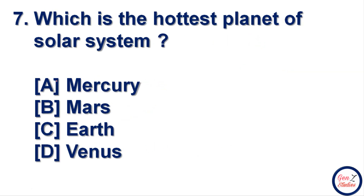Next question: which is the hottest planet of the solar system? Options are Mercury, Mars, Earth, and Venus. You might think Mercury is the answer, but that is wrong. The correct answer is Venus — option D, Venus.